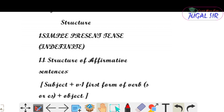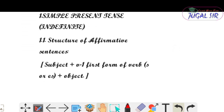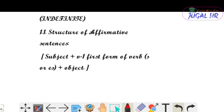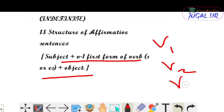हम लोग simple present tense के बारे में आज discuss करेंगे और उसका पहले structure देखते हैं। Structure of simple present tense का affirmative sentences में structure क्या होगा — subject plus V1 (S/ES) plus object। V1 मतलब verb का first form जैसे V1, V2, V3, V4।